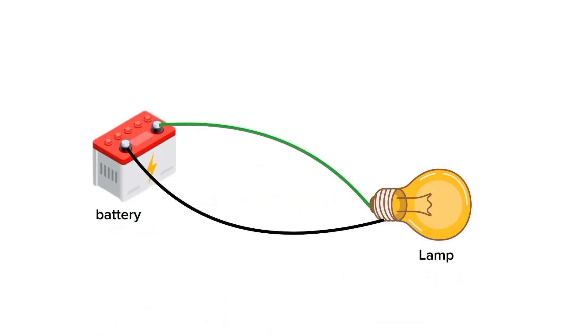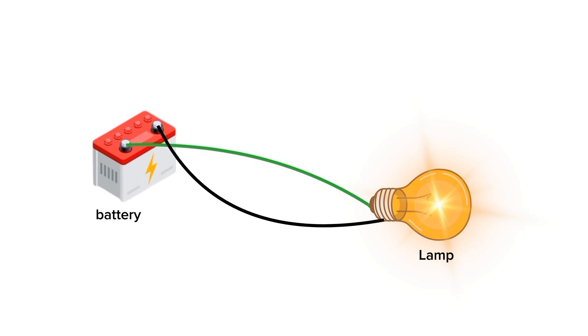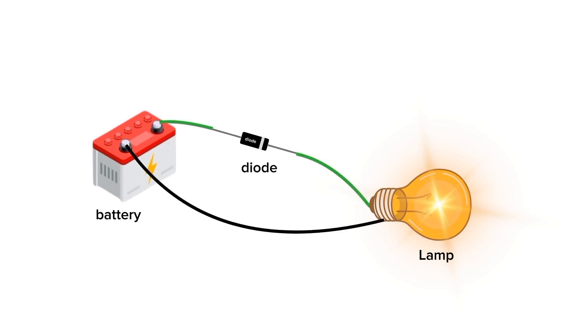For example, if we connect a lamp to a DC power supply, it will illuminate. We can reverse the leads and it will still illuminate. However, if we add a diode in series with the lamp, it will illuminate again, but if we reverse the leads, the diode blocks the current and the lamp remains off.